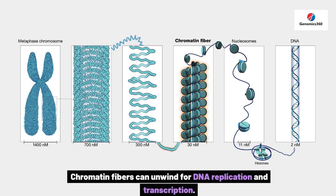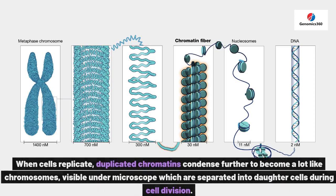Chromatin fibers can unwind for DNA replication and transcription. When cells replicate, duplicated chromatins condense further to become chromosomes, visible under a microscope, which are separated into daughter cells during cell division.